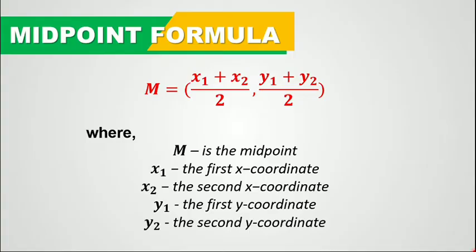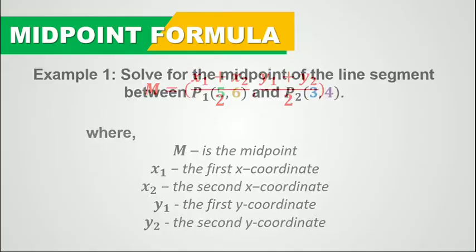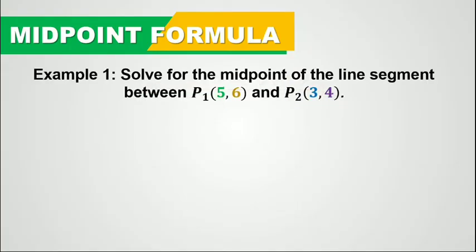Now let's take this example for you to understand how this midpoint formula works. We have to solve for the midpoint of the line segment between point 1 whose coordinates are 5 and 6, and point 2 whose coordinates are 3 and 4.